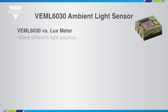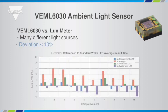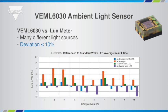There are many different light sources — compact fluorescent, halogen, LED, fluorescent, incandescent, and normal daylight. The output of an ambient light sensor should be nearly the same for all of them when they are producing the same lux output. The VEML6030 shows very good matching for all light sources; only a halogen lamp may show deviations greater than plus or minus 10 percent.